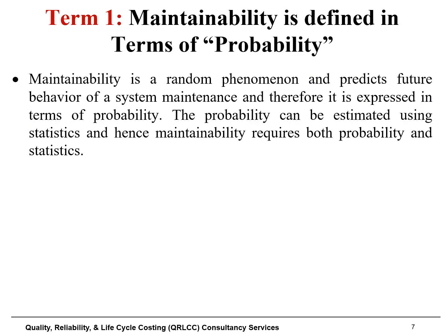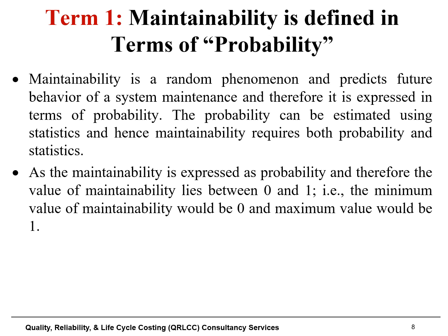Term one states that maintainability is defined in terms of probability. This means maintainability is a random phenomenon concerned with meeting the specified probability of carrying out maintenance interventions. Since maintainability predicts the future behavior of a component or system, it is expressed in terms of probability, which can be estimated using statistics. Hence, maintainability requires both probability and statistics. As a probability, its value lies between zero (the minimum) and one (the maximum).